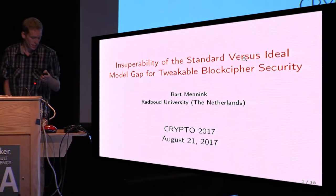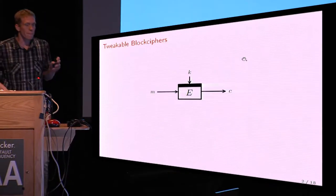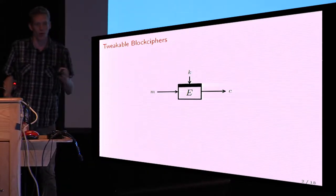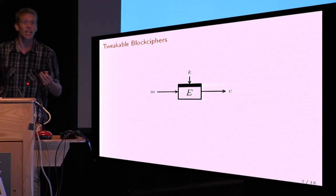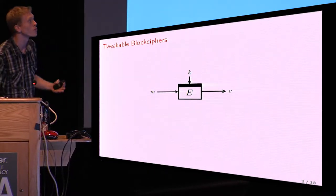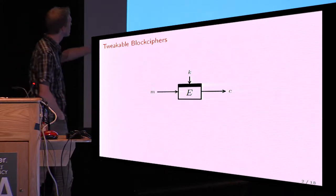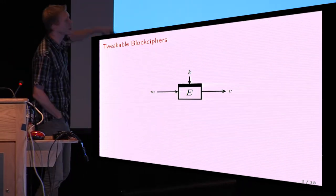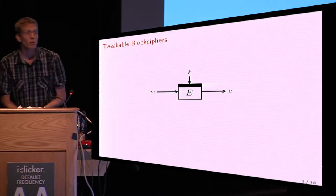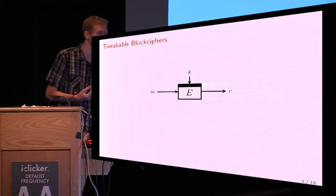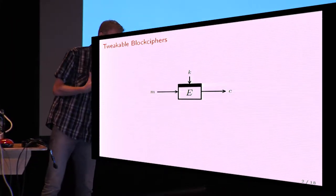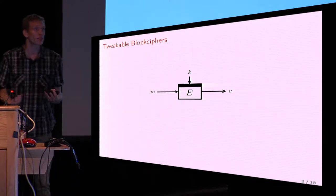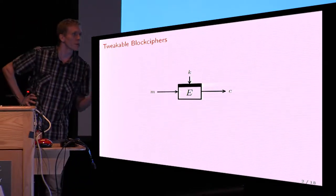Welcome to my presentation. We've seen on a previous slide what a block cipher is, so I can go over it quickly. It's a function that's essentially a permutation for a fixed key. If the key is secret, the message gets encrypted to a ciphertext in a bijective way. In many applications, however, you want to have some flexibility, as we saw in the previous presentation, but there are many other applications.